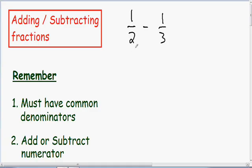Our common denominator is going to be the least common multiple between 2 and 3. Notice there is no whole number we can multiply by 2 to give us 3, because 1 times 2 is 2 and 2 times 2 is 4. So there's nothing we can multiply by these denominators to get a common denominator of 2 or 3. Whenever this happens, what I like to do is multiply by the other number.